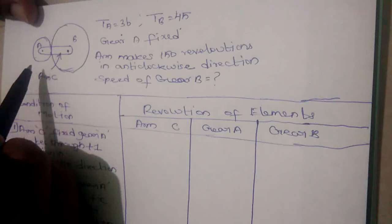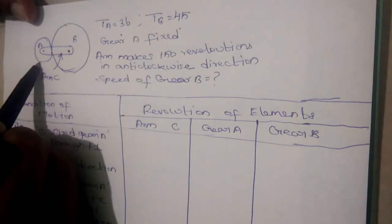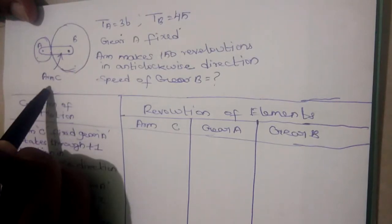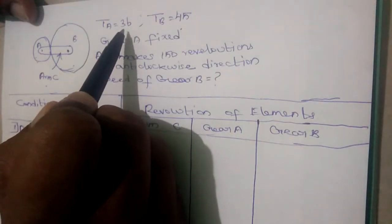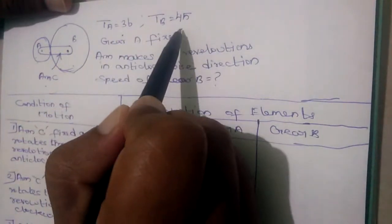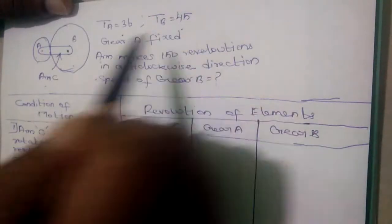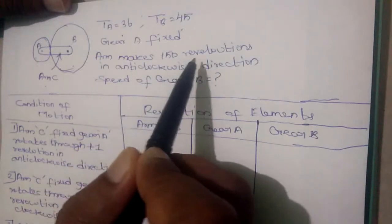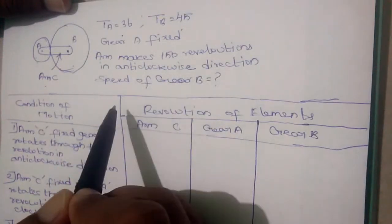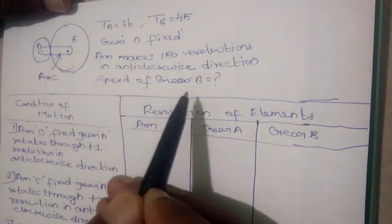This is epicyclic gear train. Gear A and Gear B are connected by arm C. Number of teeth in Gear A is 36. Number of teeth in Gear B is 45. Gear A is fixed. Arm makes 150 revolutions in anticlockwise direction. We need to find the speed of Gear B.